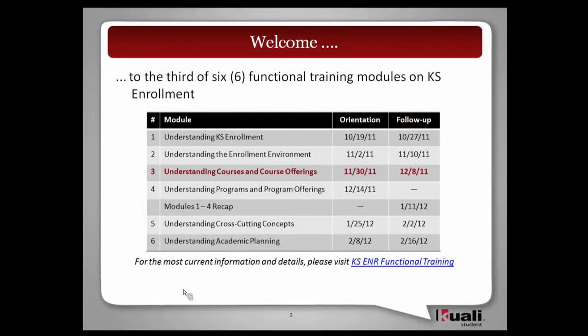Just to remind you, since it's been a few weeks since we last met, this is six modules. It's the third of six modules. We had understanding the enrollment environment — setting up academic year-end terms, setting up people and permissions, and managing the registration environment. That's all the background work necessary to offer courses, get students registered, and assess students, which is what we're going to talk about today.